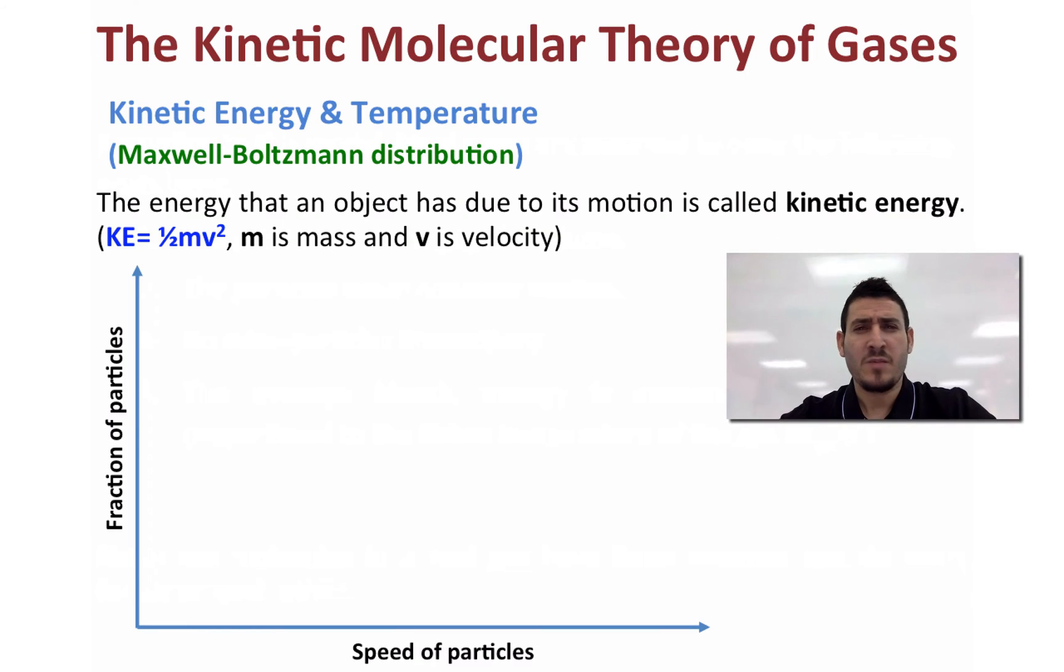So the energy that an object has due to its motion is called kinetic energy and is found by KE equals one-half mv squared, where m is the mass and v is the velocity. So if we have said for an ideal gas the kinetic energy or the average kinetic energy only changes with temperature, so it should not change with mass. Now what changes with mass is the velocity of particles and not the average kinetic energy.